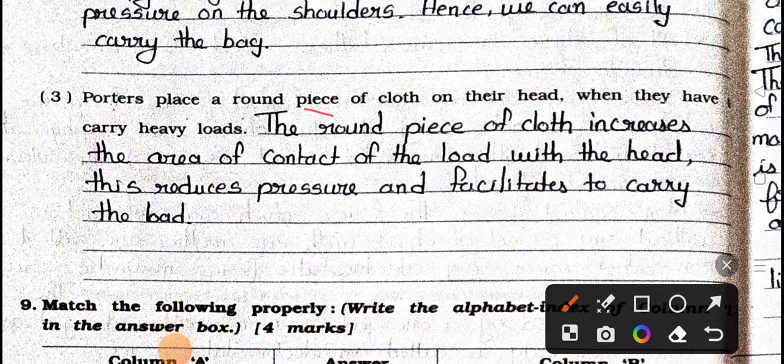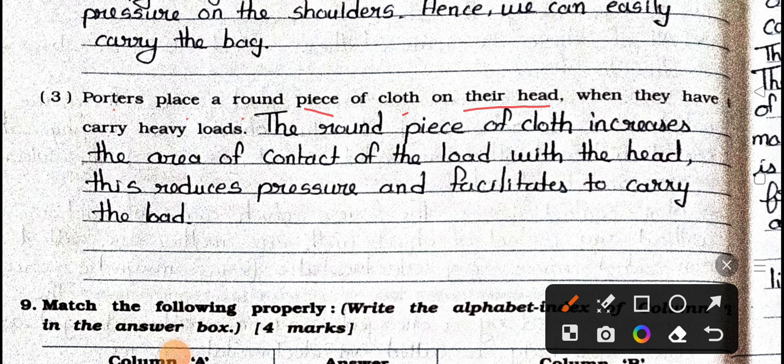Question 3: Porters place a round piece of cloth on their head when they have to carry heavy loads. Answer: The round piece of cloth increases the area of contact of the load with the head. This reduces pressure and facilitates carrying the load.